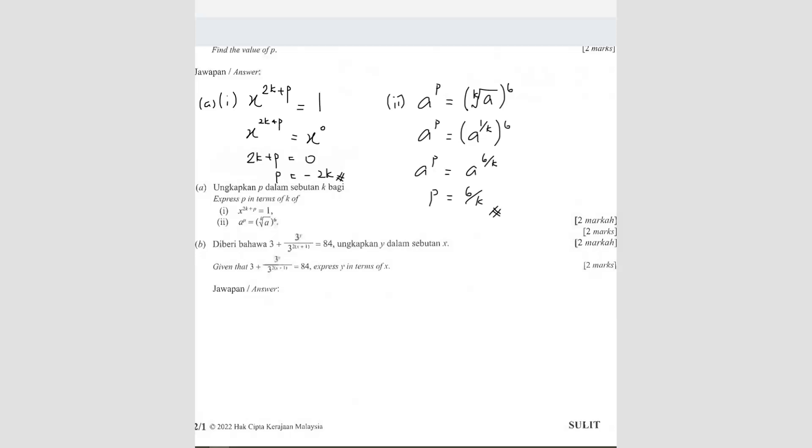Given that, okay, so this question here, I think if you can't see because it's a bit blur there. So 3 plus 3 power y over 3 power 2x plus 1 equals to 84. So this is the actual question here for those who can't see. Okay, so given that this, okay, so they give you this equation, express y in terms of x.